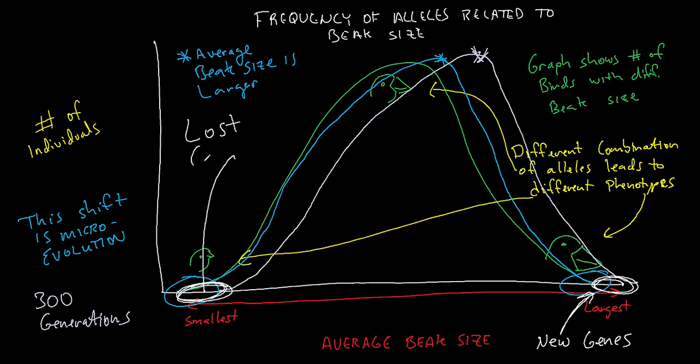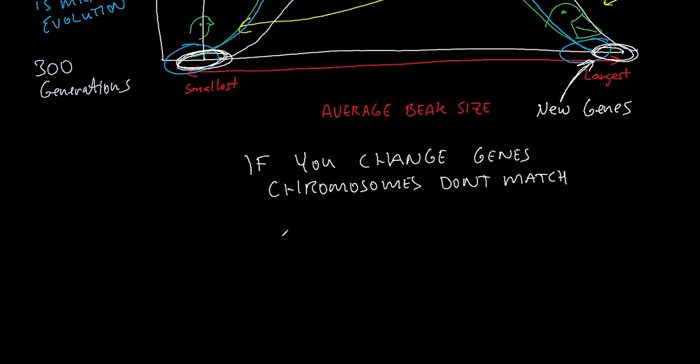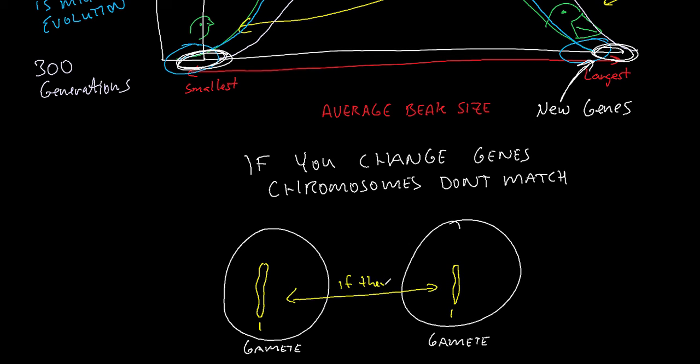Well, what we know is if you change enough of the genes, then the chromosomes won't match up anymore and reproduction can't happen. Think back to meiosis. The chromosomes have to match up. You get half from one parent and half from the other parent, and they have to match up. And if they don't match up, you have usually fatal errors in the reproduction, and those cells die.